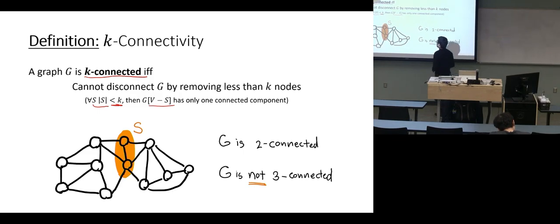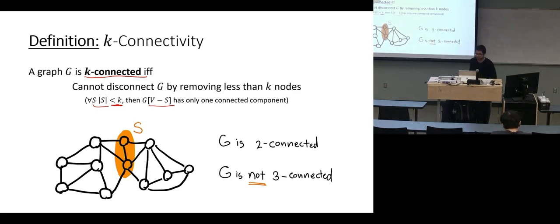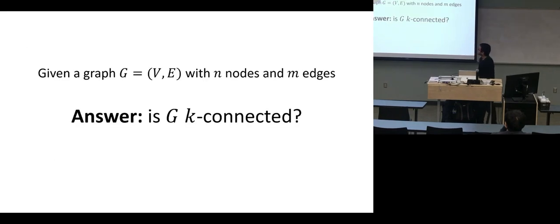For example, this graph is 2-connected because if you delete only one node, everything stays connected. But it's not 3-connected because of this set. And what is 1-connected? One-connected is just the same as saying the graph is connected — you don't delete anything and check if the graph is connected.